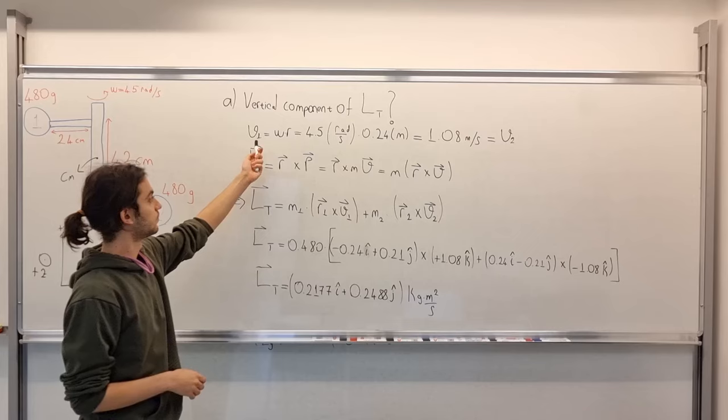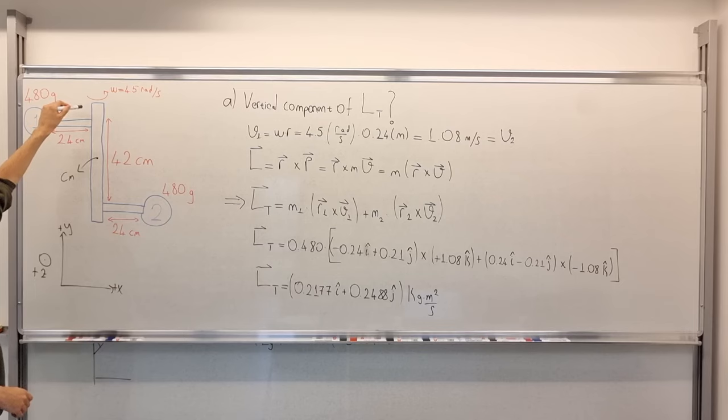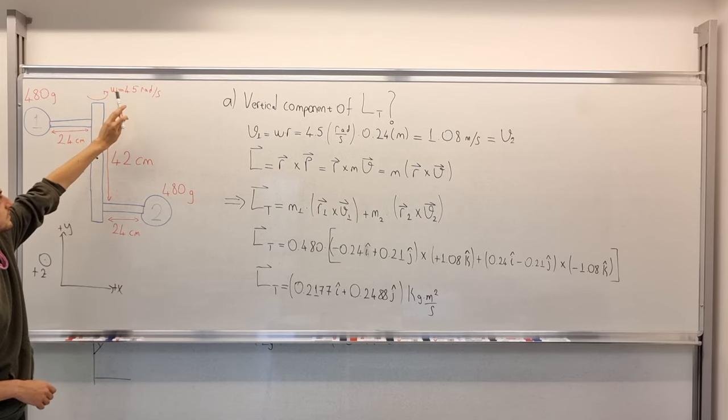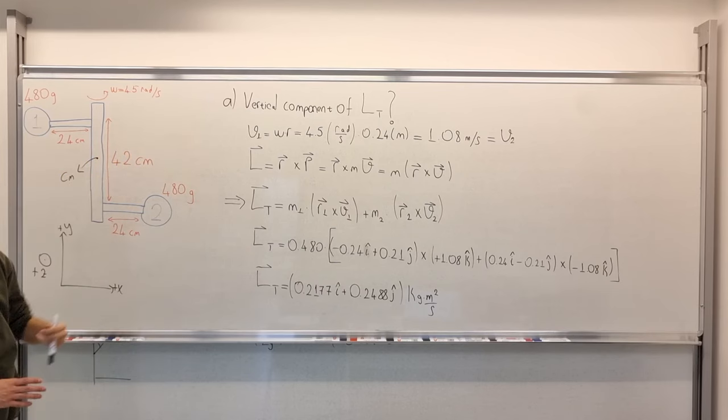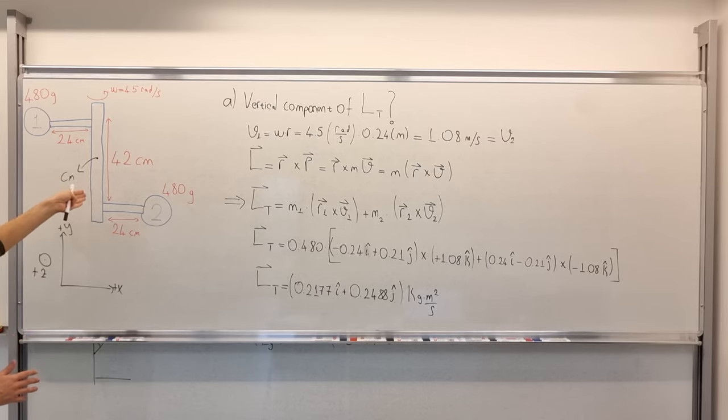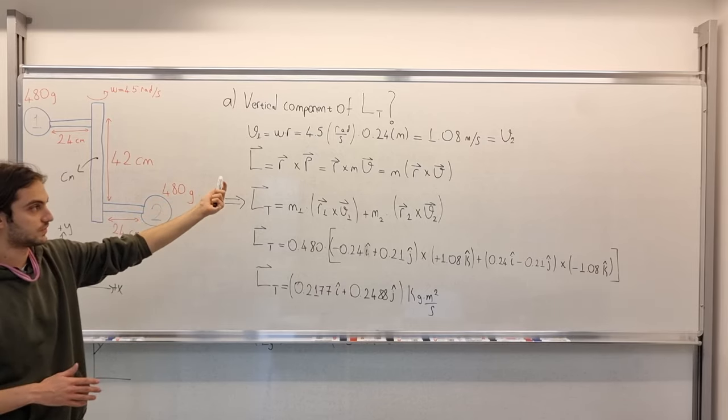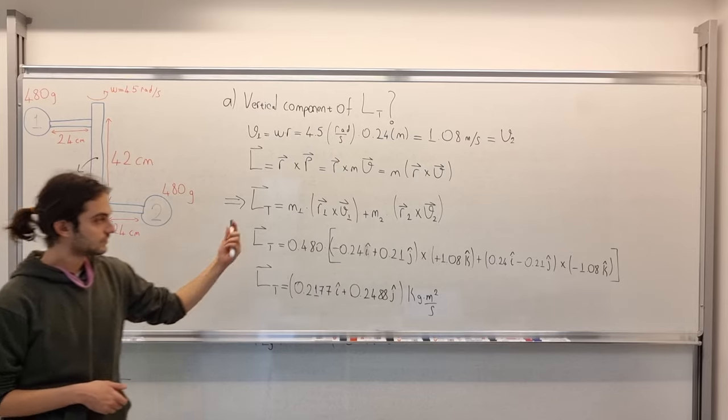So, that means V1 and V2, because this axle is turning around this spin axis with an angular speed of 4.5 radians per second. And since these have equal distance to the axis, they are equal. V1 and V2 are equal at 1.08 meters per second. We come here.